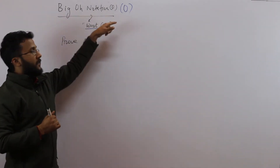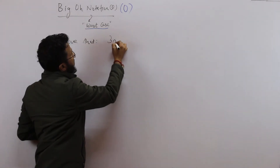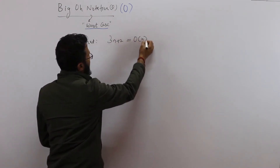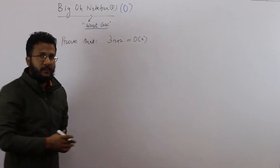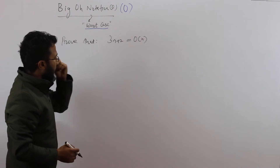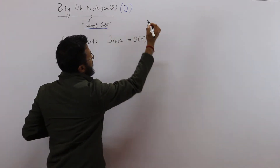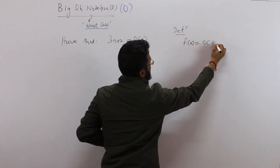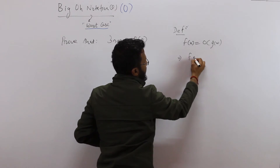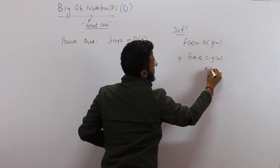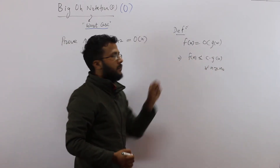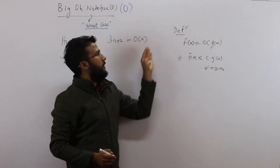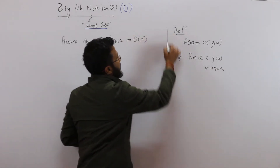Now let's do some examples on Big O notation. Let's say we have to prove that 3n plus 2 belongs to Big O of n — that is, we write 3n plus 2 is Big O of n. By the definition of Big O: if fn equals Big O of gn, we have to show fn ≤ c times gn for all values of n greater than or equal to n₀, where c is a constant. If we can show this inequality is true for some value of c and n₀, we can prove it's Big O.